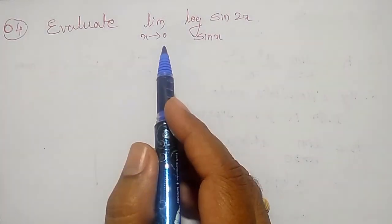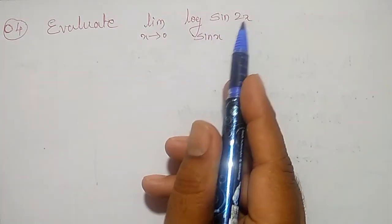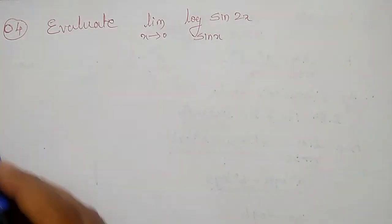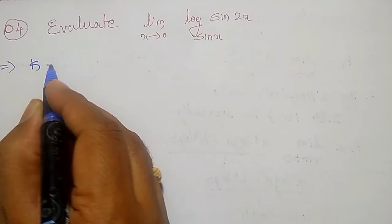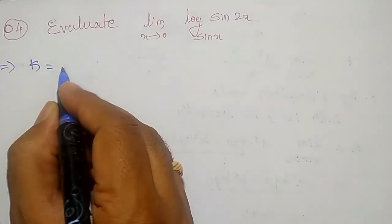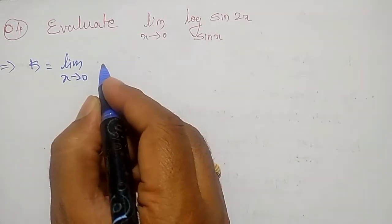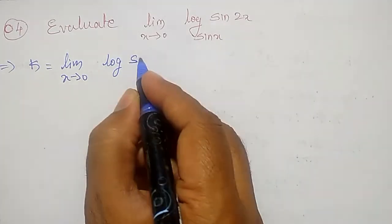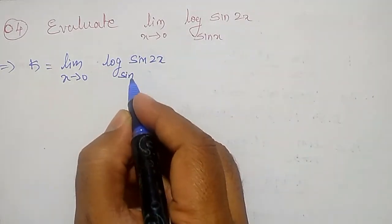Welcome friends, in this video I am going to evaluate the limit as x tends to 0 of log of sin 2x to the base sin x. First of all, let me call this equal to k, that is limit as x tends to 0 of log of sin 2x to the base sin x.